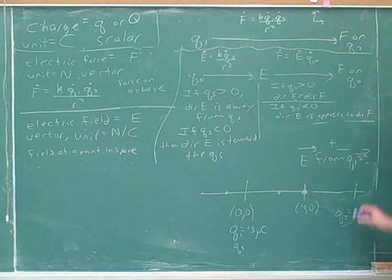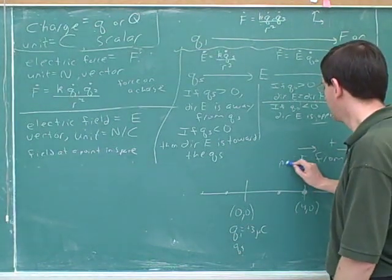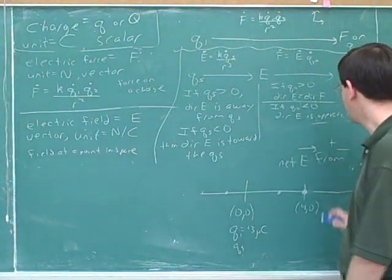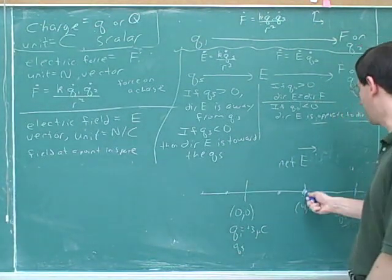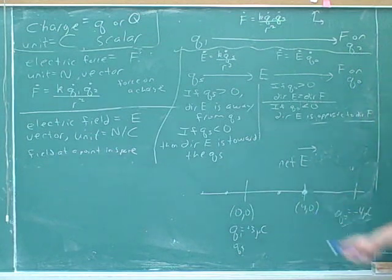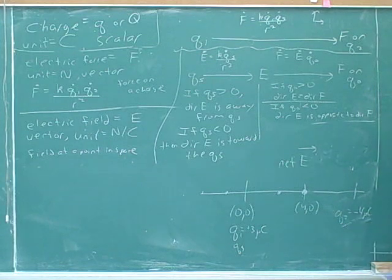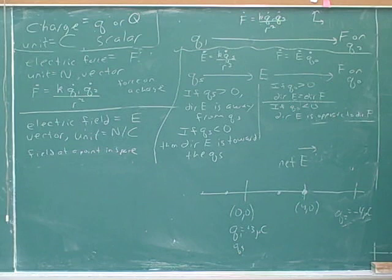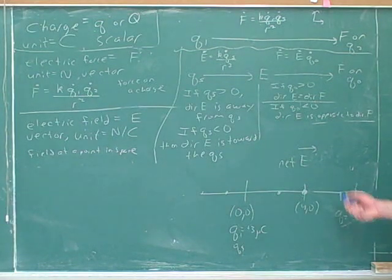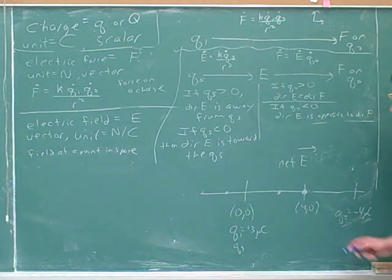Now let's say we wanted to find the net electric field at this point. How can we find the net electric field at this point from these two charges? We could probably add the electric field from each, making sure to get the right signs. Just for practice, what would be the direction?